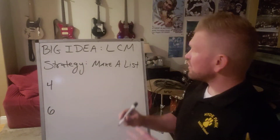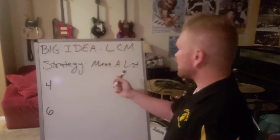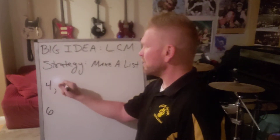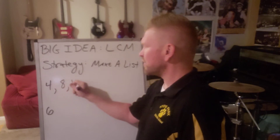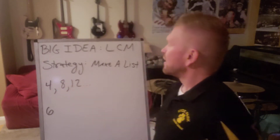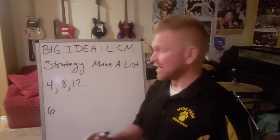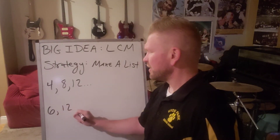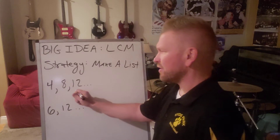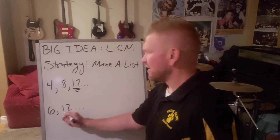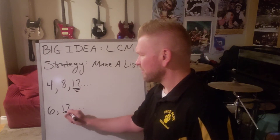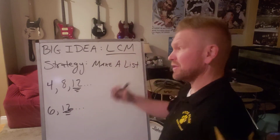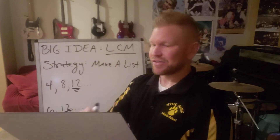Let's say you're thinking about this problem and you're going to make a list. The list for the first light: 4, 8, 12, and so on. The list for the second light: it'll blink at 6, it'll blink at 12, and so on. And you might look and go, wait a minute, I found it — they both blink at 12. And 12 is the least common multiple, so you might be thinking, I got it, the answer is 12.